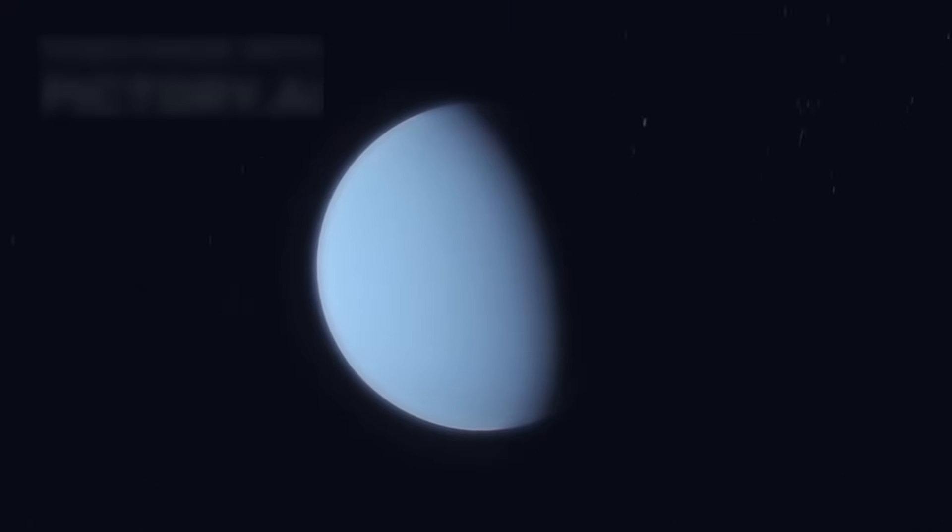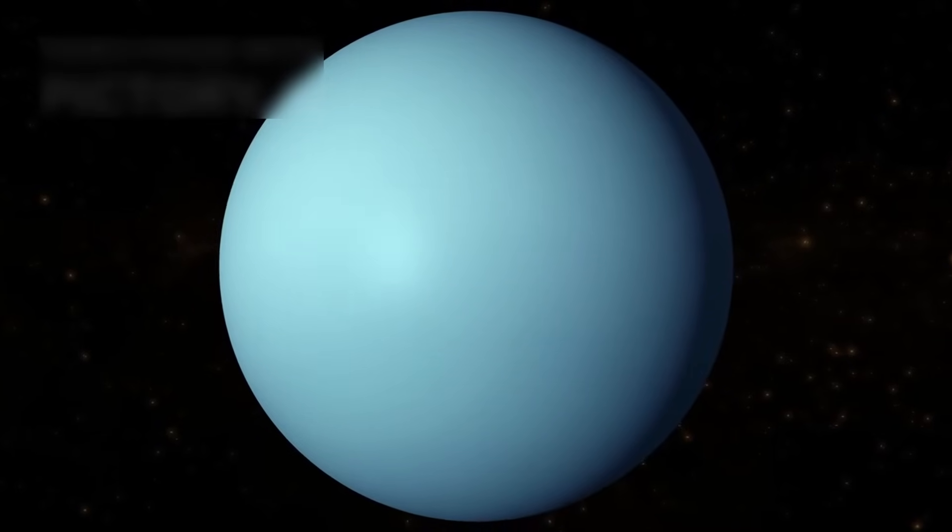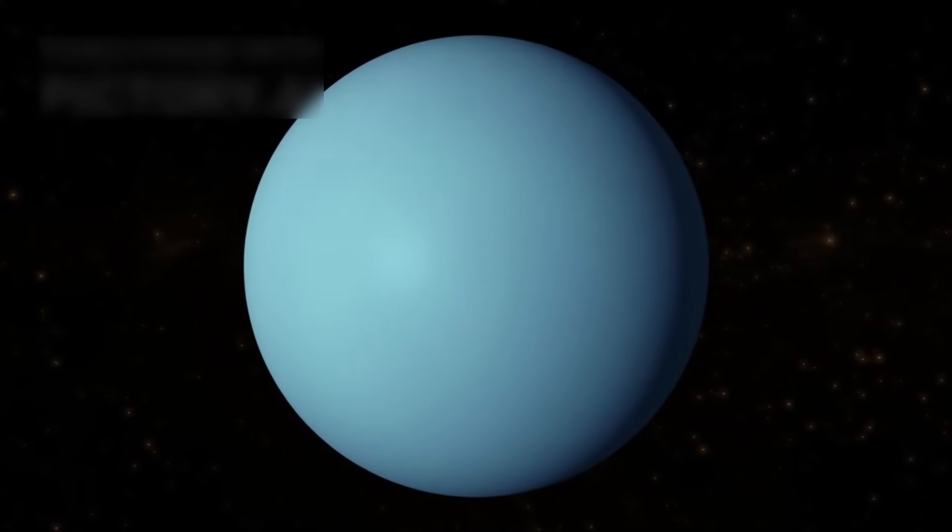Voyager 2 also studied Miranda, a strange moon of Uranus with twisted terrain. It captured details of magnetic fields, unusual patterns, and odd tilts of Uranus's environment.